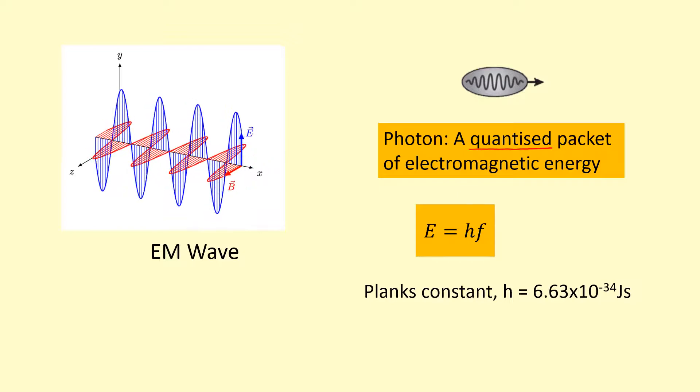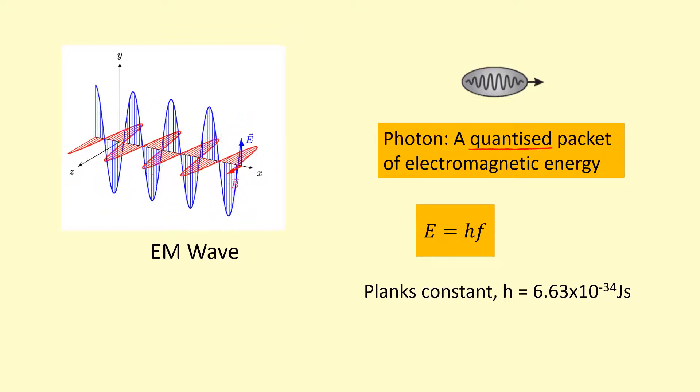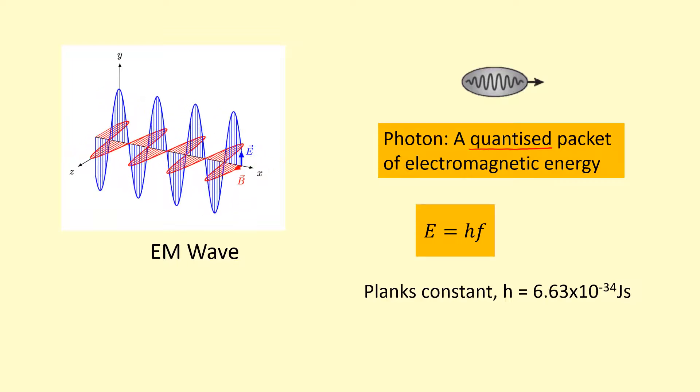And F is frequency in hertz. Sometimes you don't have the frequency. Instead, you've got speed and wavelength.